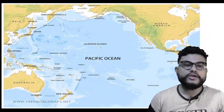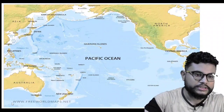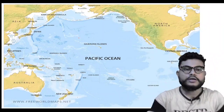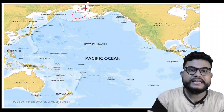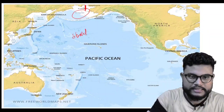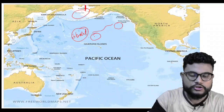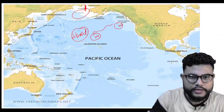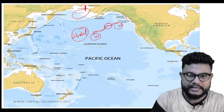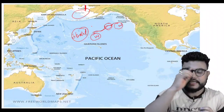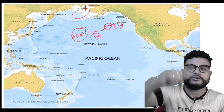Now we are talking about the Pacific Ocean in detail. Pacific Ocean — to the north you have the Bering Sea and Bering Strait. A strait is a narrow water passage connecting two large water bodies. The Bering Strait connects the Pacific Ocean to the Arctic Ocean. So the north boundary of Pacific Ocean is the Bering Sea as well as Bering Strait.